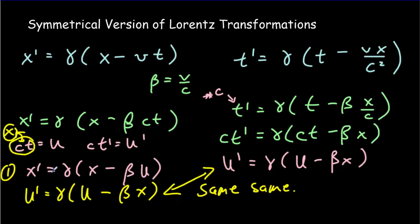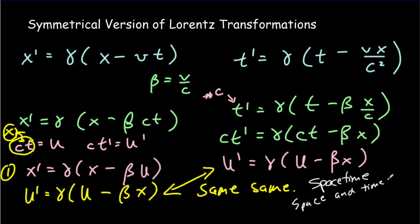This symmetry says that x and ct are the same kind of thing. They would have the same units: if you multiply a speed by time you get a distance, and x is a distance. So space and time are kind of the same stuff, and that's why we call it spacetime — space and time entangled into one fabric. And if they're joined into one fabric, they must have the same units, which we see when we choose our variables as ct and x.